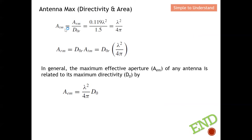Rearranging the formula by cross-multiplying and substituting back, we arrive at D₀r = (4π / λ²) · A_em, which successfully proves the equation. In general, the maximum effective aperture of any antenna is related to its maximum directivity by D₀ = (4π / λ²) · A_em.